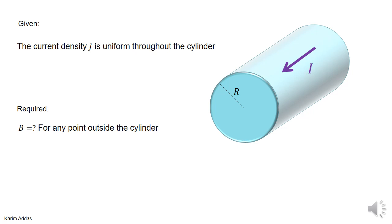In this example we want to find the magnetic field due to a thick wire that has a current I going through it. The current is uniformly distributed along the cross section of the wire — the current density J is uniform. We want the magnetic field for any point outside and any point inside. First we'll find what the magnetic field is for any point outside, then we'll do the other case.